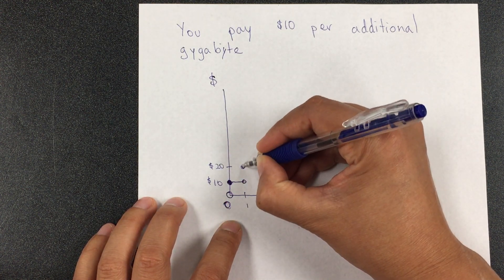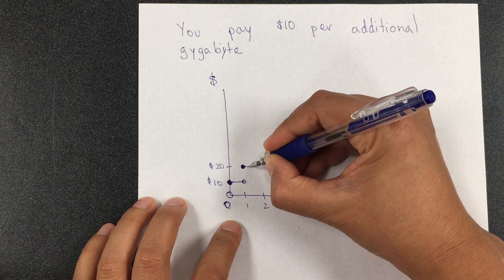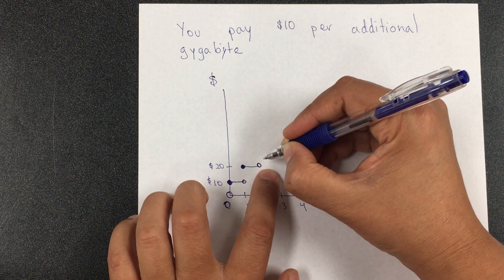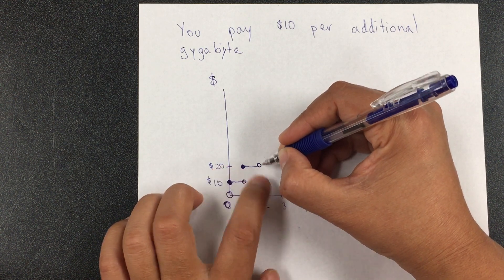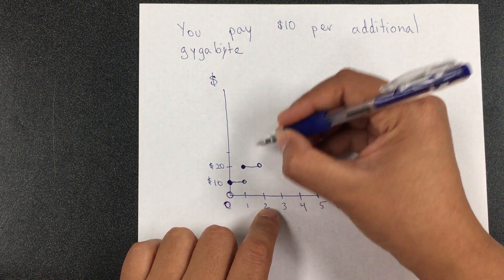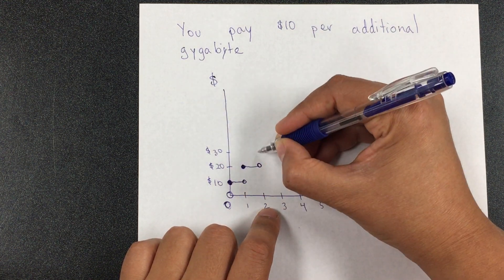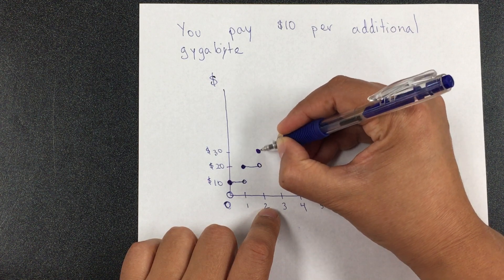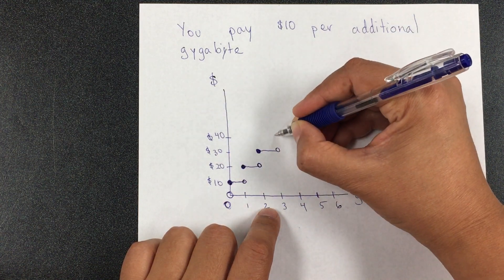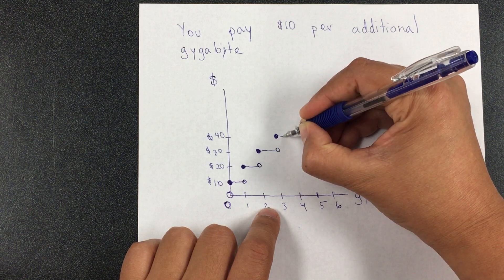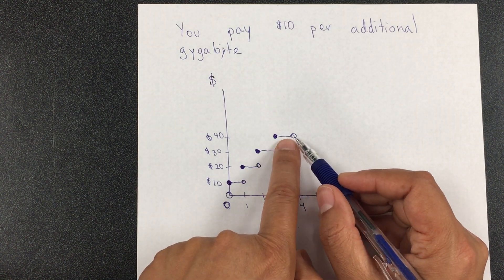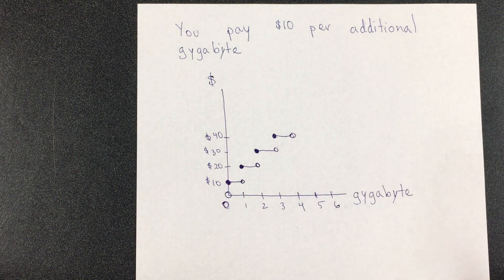Then I use part of the second gigabyte, and I get to 2 gigabytes. I still have, with the $20, up to that 2 gigabytes. I don't pay any additional money, but then I get to start a new gigabyte, and so I'm going to pay an additional $10. And so on. What does that mean? I use 3.5, 3.9 of the next gigabyte, and I still, with that, $10.